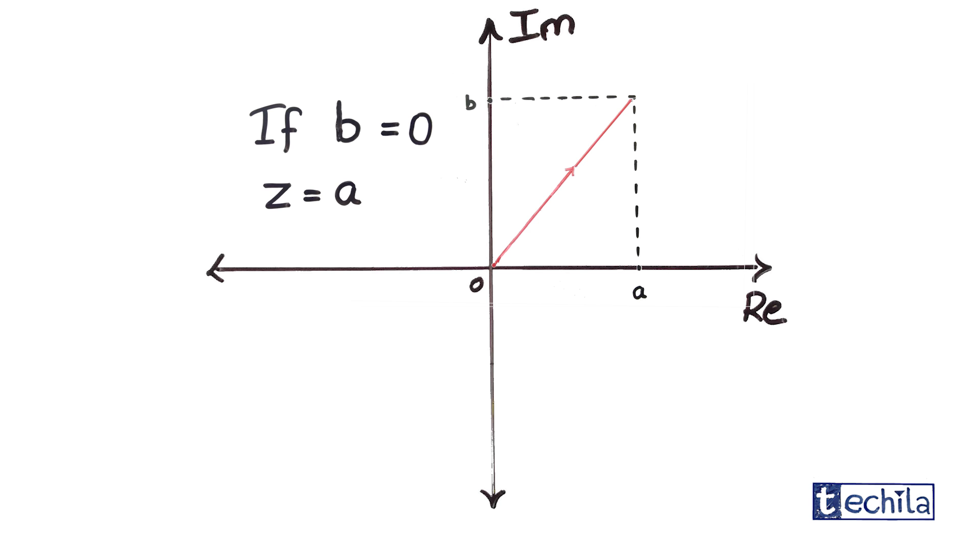If a number is purely real number, then its imaginary part is 0 and it lies on the real axis. While if a number is purely imaginary number, its real part is 0 and it lies on the imaginary axis.